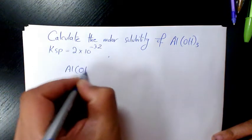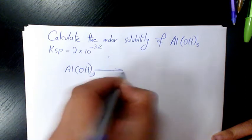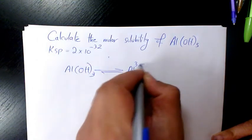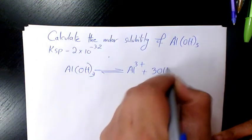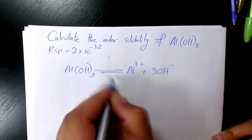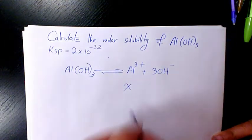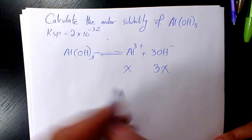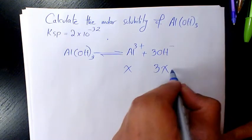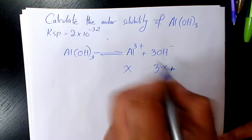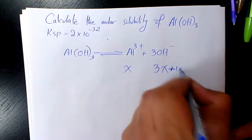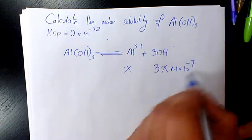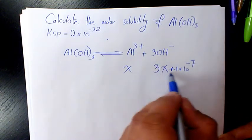We have aluminum hydroxide. When it dissolves, it's going to produce aluminum and 3 hydroxide. It means that it's going to produce X mole per liter of aluminum and 3x of hydroxide. You know we have hydroxide, pure water has 1 times 10 to the power of negative 7, so the final concentration is going to be 3x plus 1 times 10 to the power of negative 7.